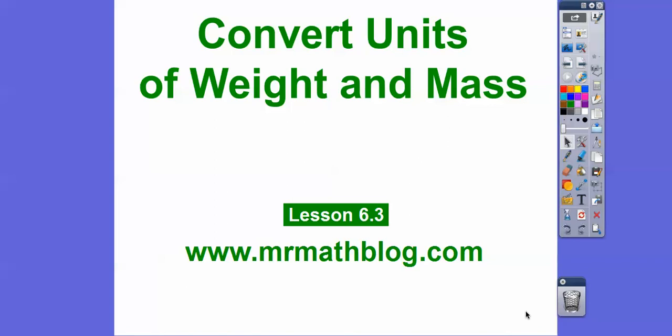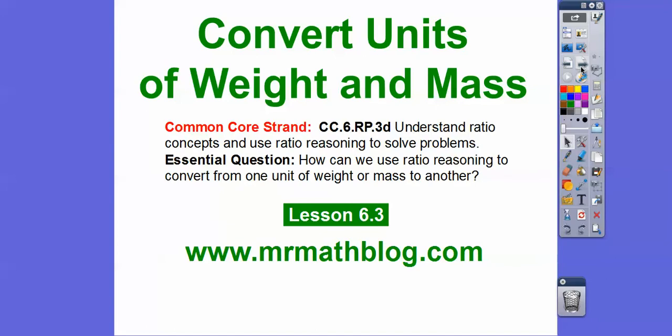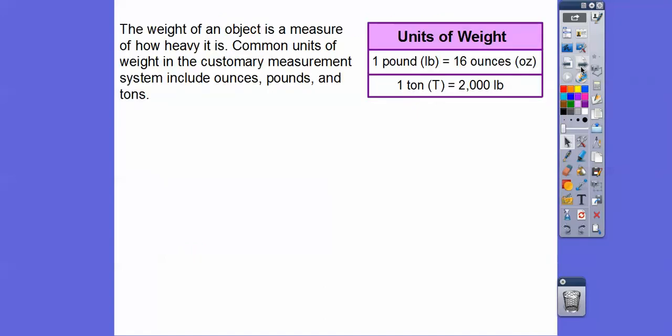Hey everybody, this is Mr. MathBlog. This lesson is converting units of weight and mass. We're going to do the customary units and the metric units. Don't forget, all your lessons can be found at MrMathBlog.com. Here's our common core strand, and our question here is: how can we use ratio reasoning to convert from one unit of weight or mass to another unit?